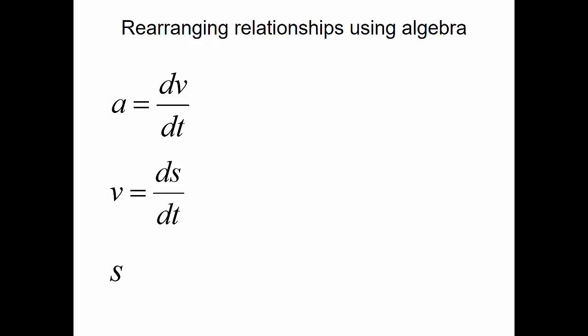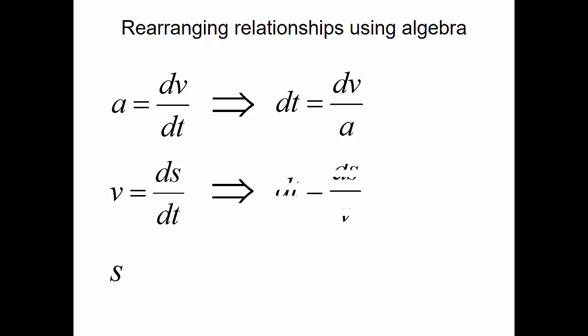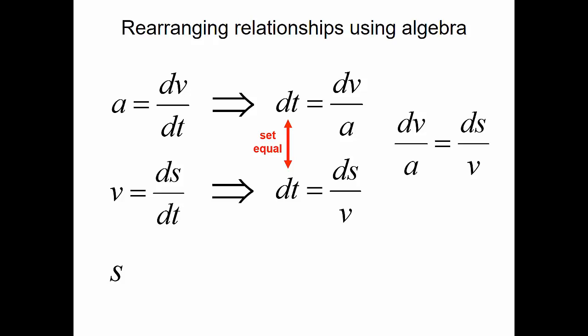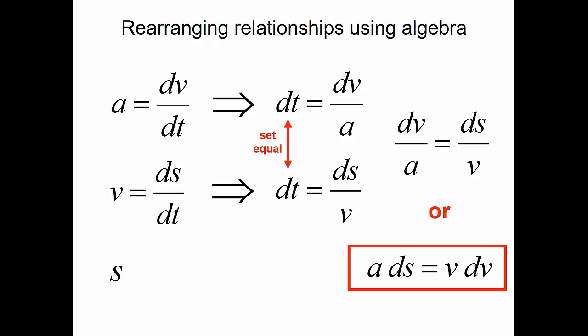Let's look at another situation. What if we rearrange some of these relationships using algebra? We have a dt that's in common with our acceleration and our velocity equations. So if we solve for dt for the acceleration, we get dt is equal to dv over a. And for our velocity equation, dt is equal to ds over v. Setting these equal to each other, we get dv over a is equal to ds over v. Then, collecting like terms, we can determine that the acceleration times ds is equal to the velocity dv.